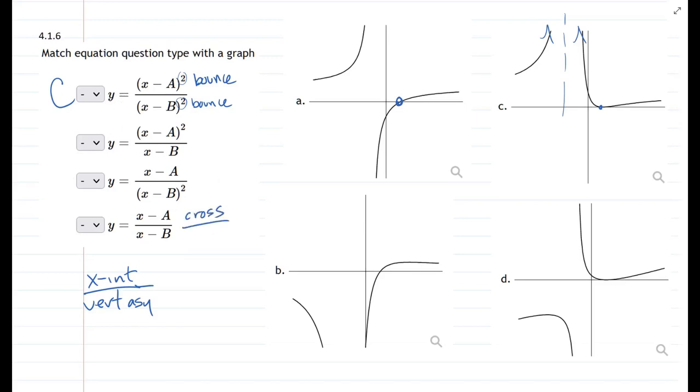So it goes cross in the x-intercept, cross in the vertical asymptote.